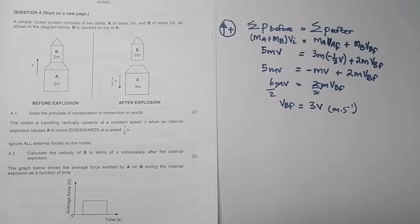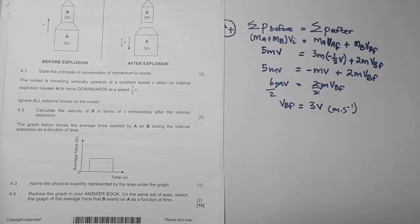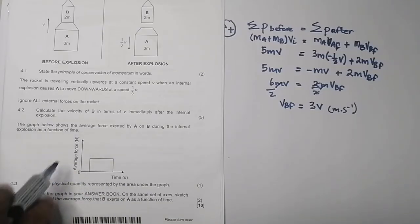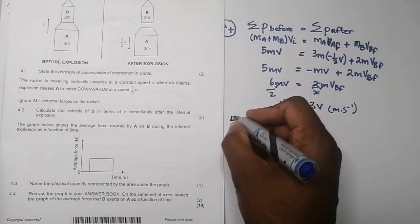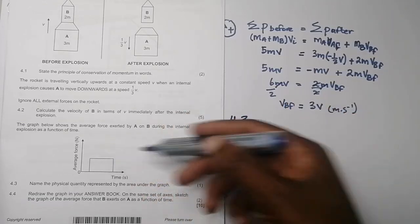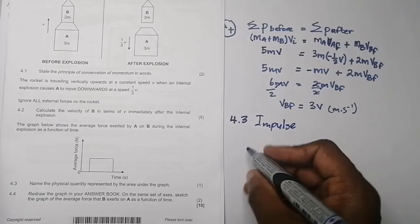The next question: they say the graph below shows the average force exerted by A on B during the internal explosion as a function of time. Name the physical quantity represented by the area underneath the graph. Remember, to take area you say it's going to be the length multiplied by the breadth, so it's force multiplied by time, and what is that? It's impulse. So the area gives us the impulse.